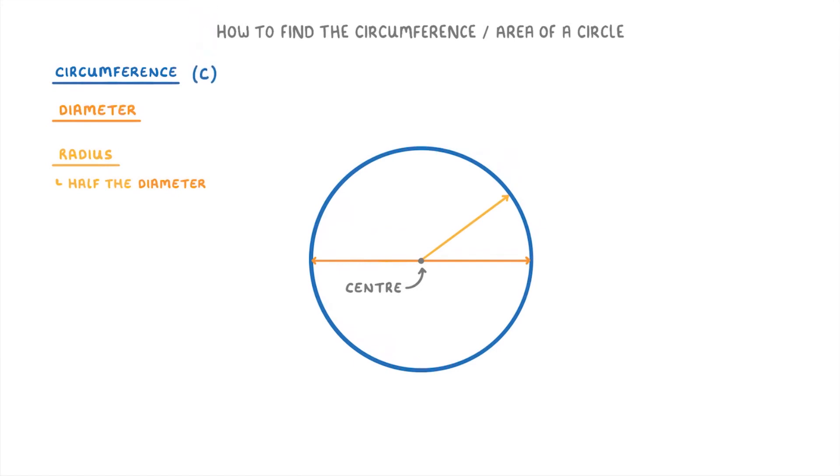Also we represent the circumference with an uppercase C, the diameter with an uppercase D, and the radius with a lowercase r.